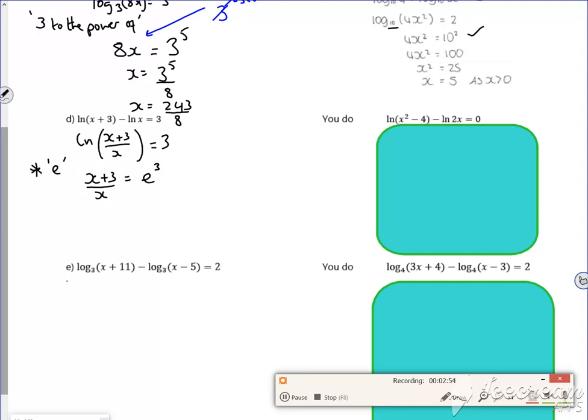Now this is like a GCSE rearrange one, which nobody likes. So that's x, e to the 3. So I'm going to take that over there, and I'm going to take 3 over there. So I've got x minus x e cubed is equal to minus 3.